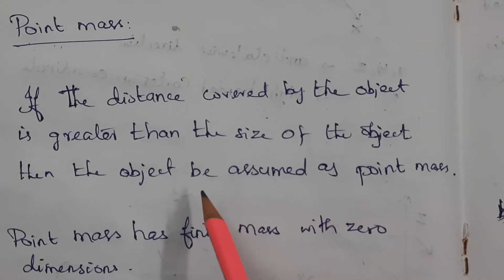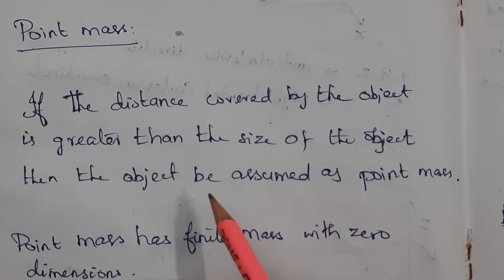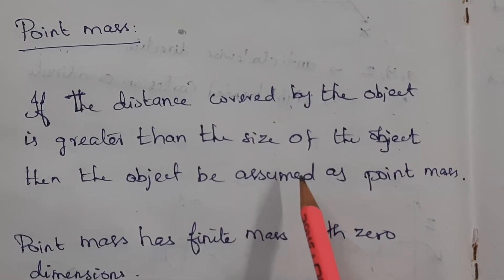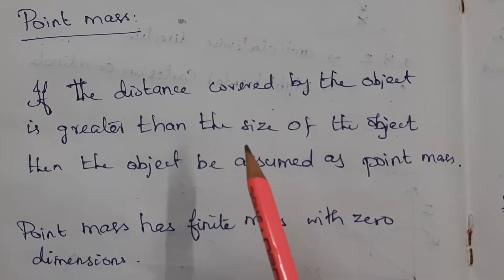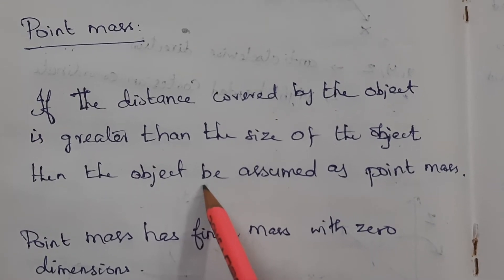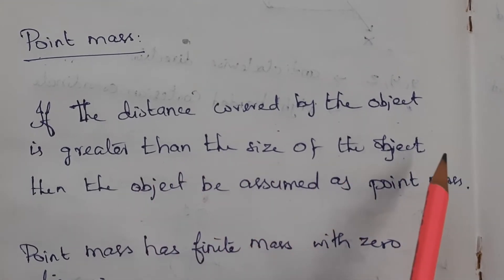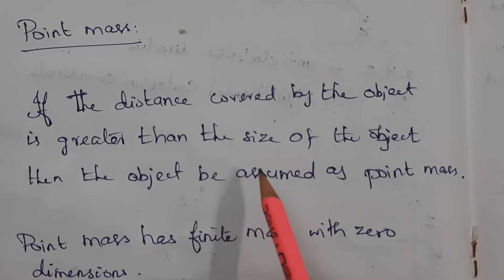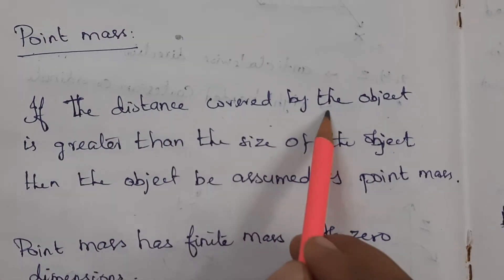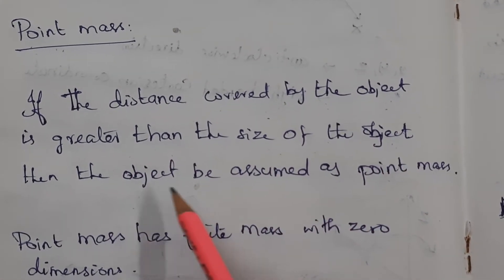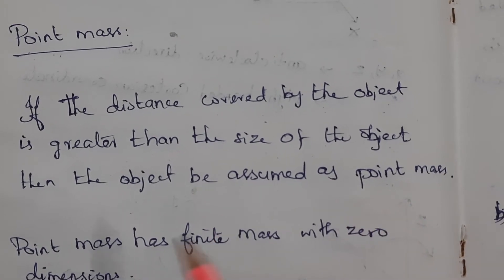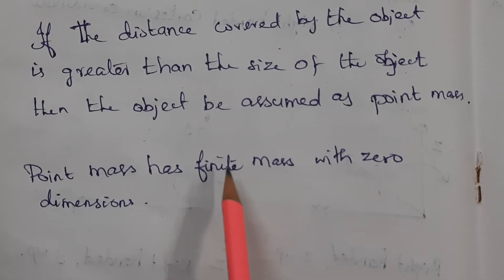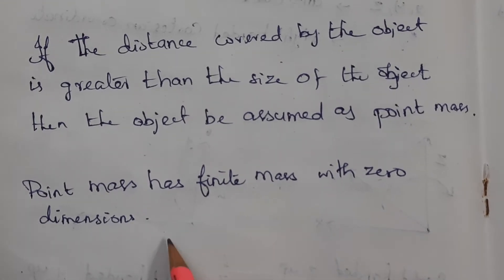When we consider a train travelling from one point to another — suppose 1000 kilometers — instead of the train's full size, we can consider it as a point object or point mass. Compared to the distance covered, the size of the train is very small. The point mass has finite mass with zero dimension.